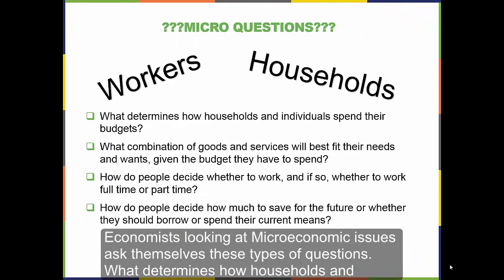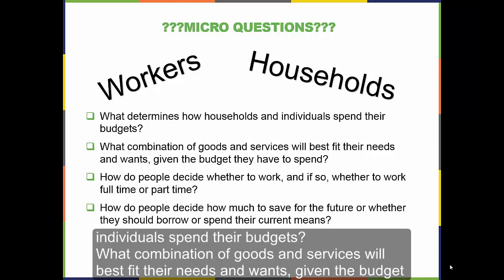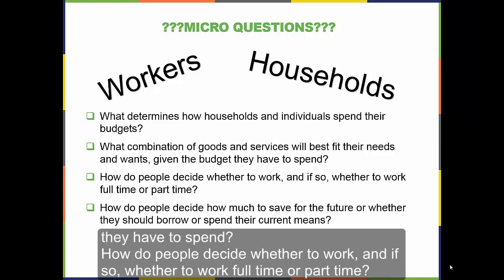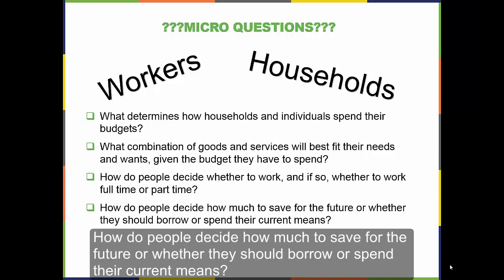Economists looking at microeconomic issues ask themselves these types of questions: What determines how households and individuals spend their budgets? What combination of goods and services will best fit their needs and wants, given the budget they have to spend? How do people decide whether to work, and if so, whether to work full-time or part-time? How do people decide how much to save for the future, or whether they should borrow or spend their current means?